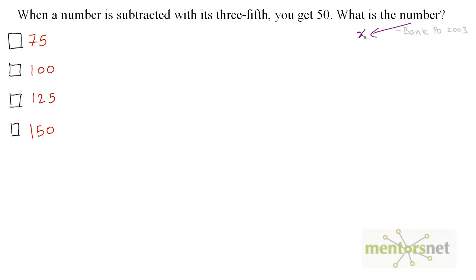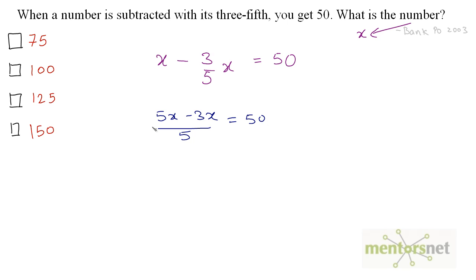Let this number be x. When x is subtracted with its 3-fifths, you get 50. So x minus 3/5x can be written as (5x minus 3x) divided by 5, which equals 50. 5x minus 3x is 2x, so 2x = 50 times 5 = 250, therefore x = 250 divided by 2 = 125. So option C is the right answer.